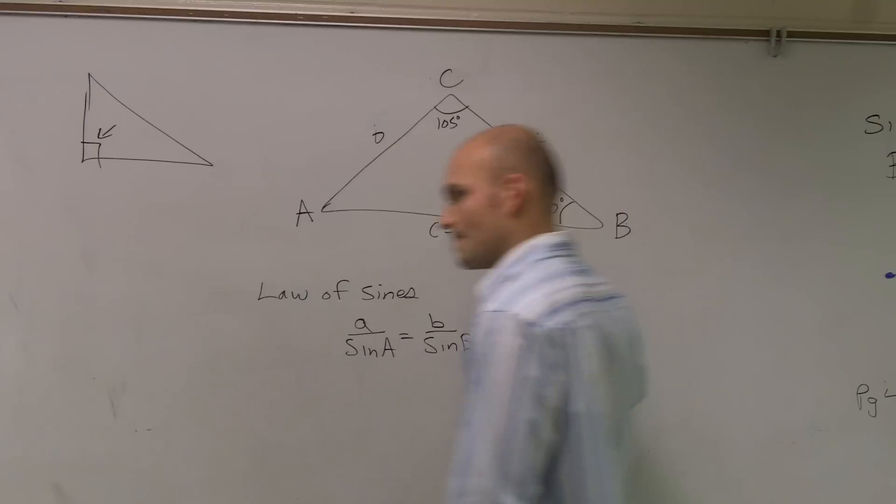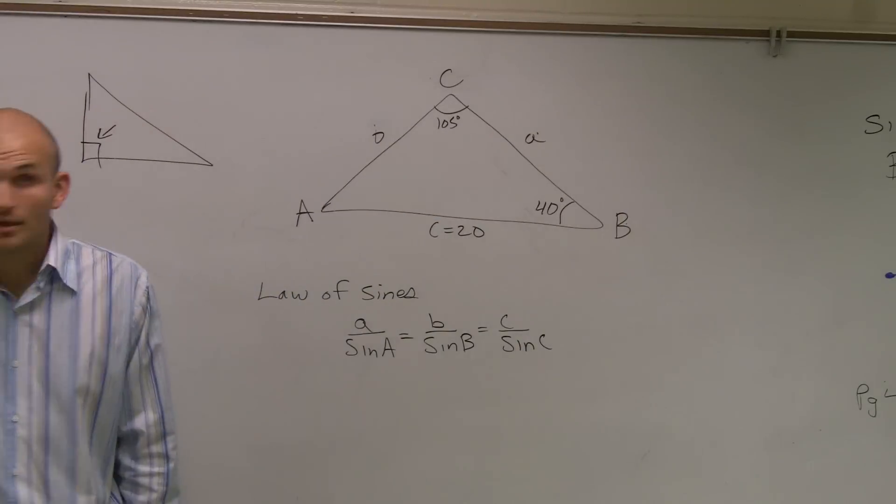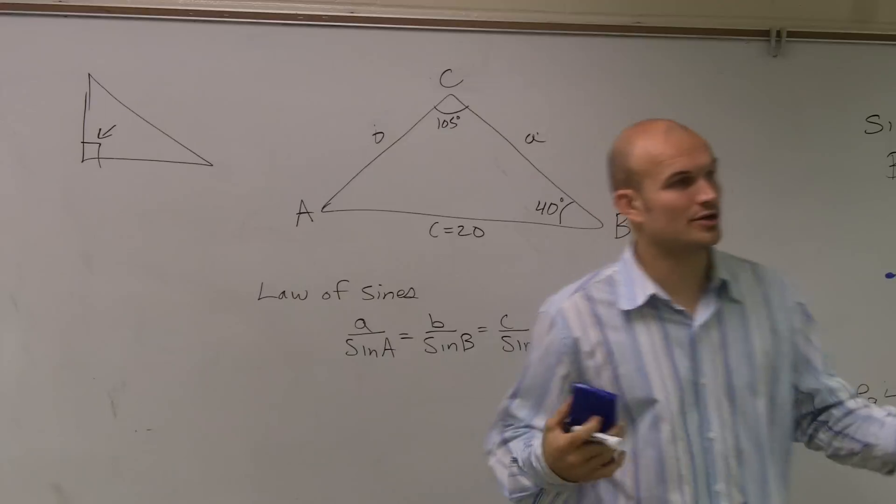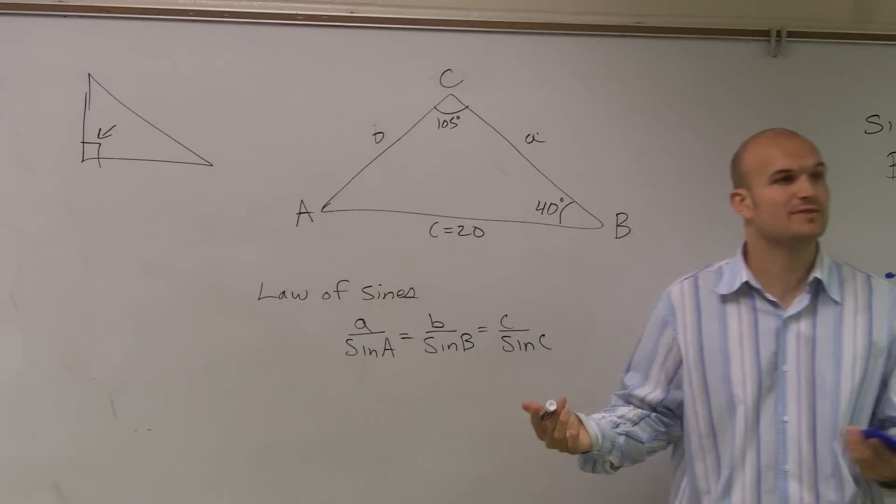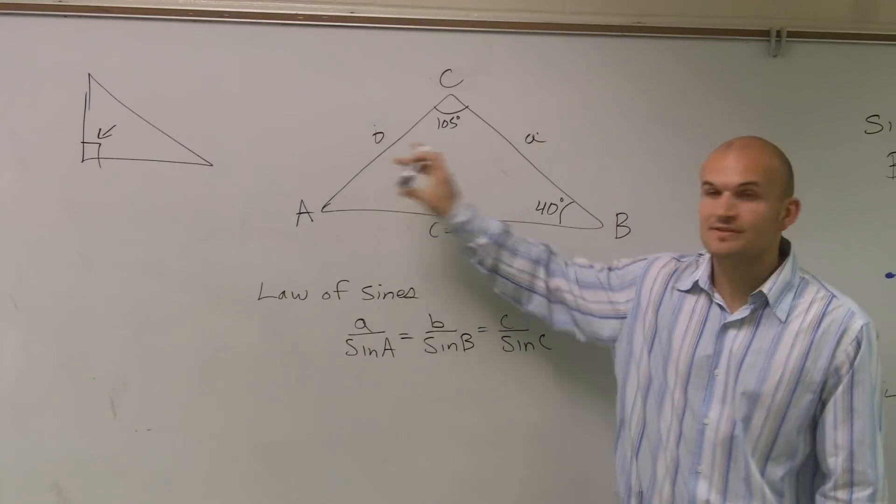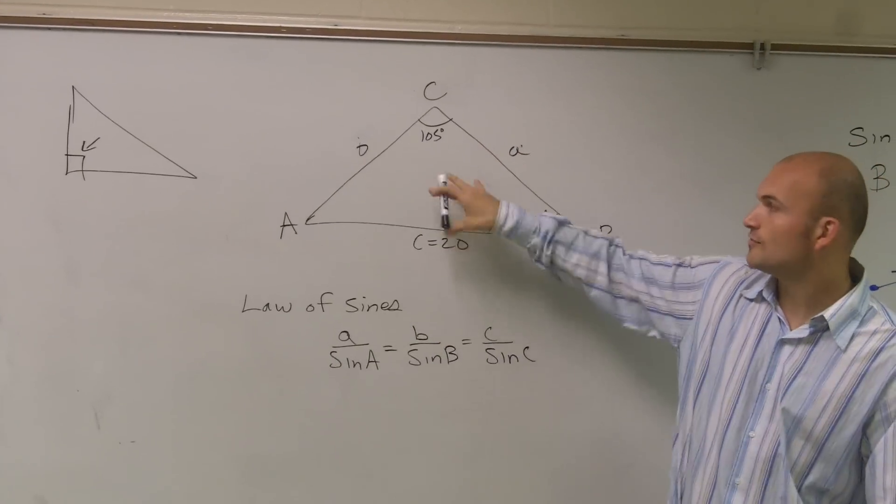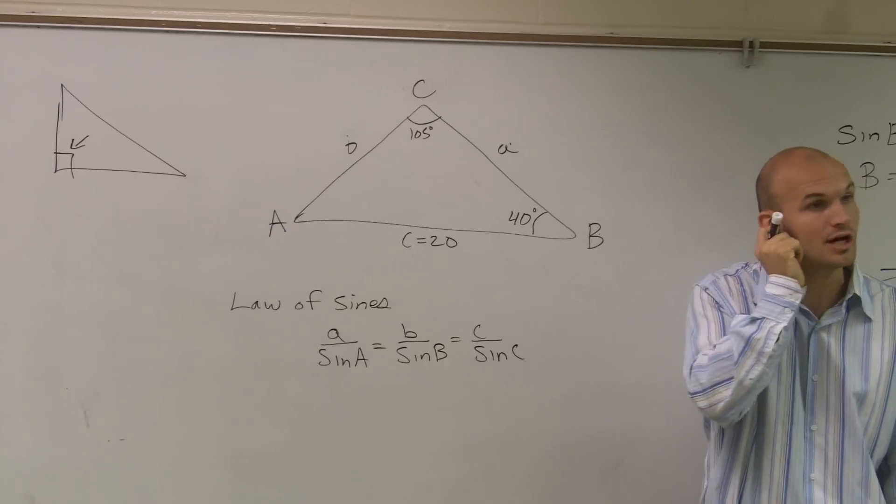All right, so we have this triangle, and we notice it's not a right triangle, so we can't use our general trigonometric terms or even the Pythagorean Theorem. We have to now use either law of sines or law of cosines. For this problem, we're going to be able to use the law of sines.